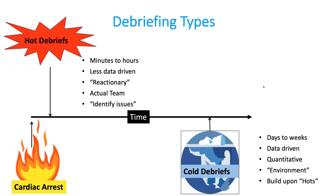Cold debriefing happens days to weeks after an event and is really focused on the data about what happened and what the outcomes were. We like to say we debrief the environment — it's not just the team that was present at the arrest, but any nurse, physician, or respiratory therapist who works in our environment and can learn from that event. We use information discovered in the hot debriefing during a cold debriefing. This is important especially in pediatrics, where cardiac arrest events are fairly rare — at most once a week — meaning many staff members aren't getting as much exposure as we might imagine.